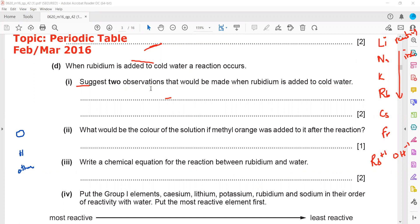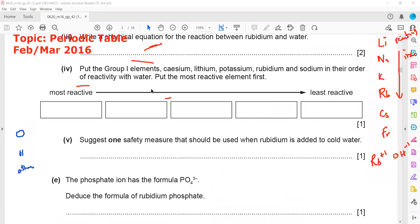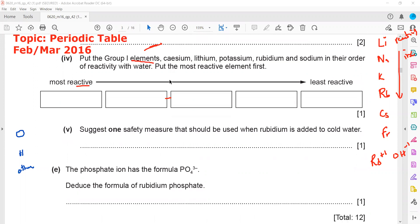Put the group one elements cesium, lithium, potassium, rubidium, sodium in order of reactivity. Order of reactivity, most reactive first. So which one is the most reactive? You can use screen annotation to complete these boxes. Just write the symbol instead of writing full. You can write cesium as Cs, rubidium as Rb, potassium.